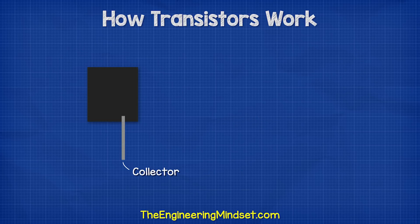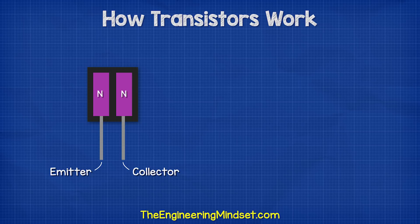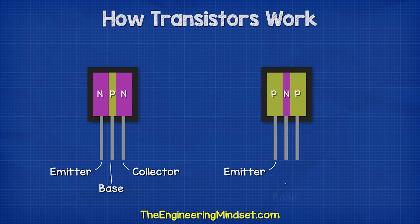Inside the transistor, we have the collector pin and the emitter pin. Between these in an NPN transistor, we have two layers of N-type material and one layer of P-type. The base wire is connected to the P-type layer. In a PNP transistor, this is just configured the opposite way. The entire thing is enclosed in a resin to protect the internal materials.